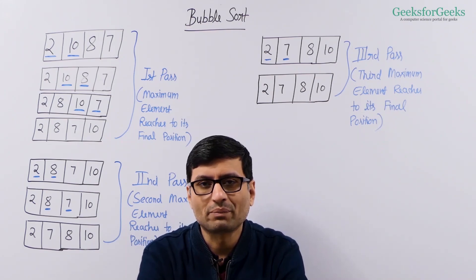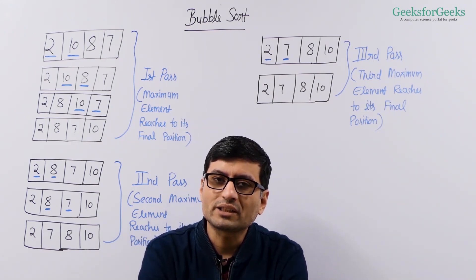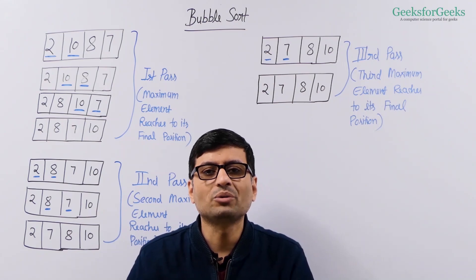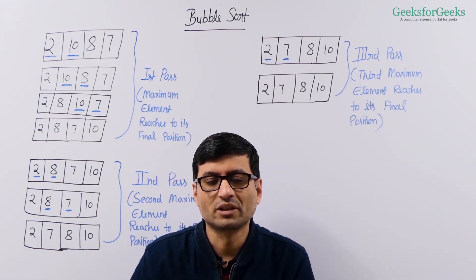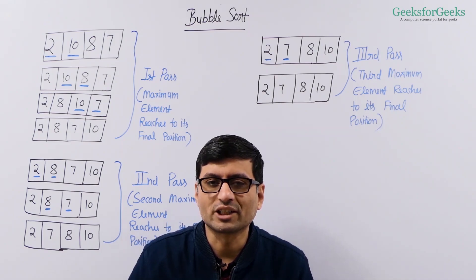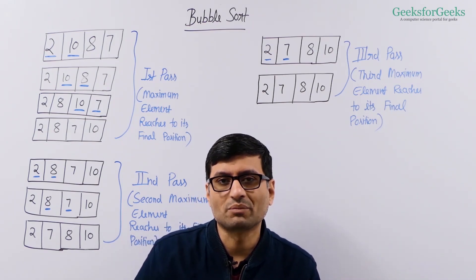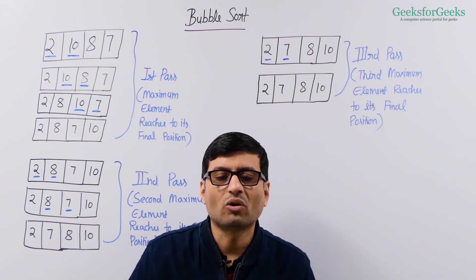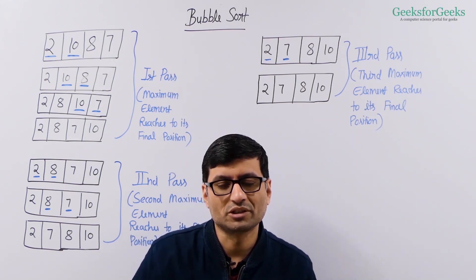Bubble sort has multiple passes. In the first pass, we move the largest element to the last position, which is its final position. In the second pass, we move the second largest element to the second last position, which is its final position. We keep doing it until all the elements are moved to their correct positions.